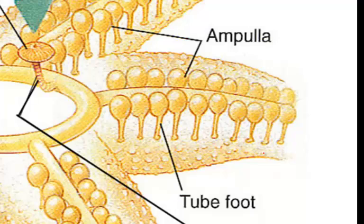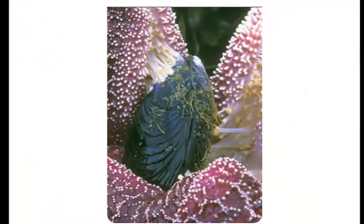Tube feet are used for movement, food collection, and respiration. The opposite end of the tube feet is a muscular sac called the ampulla. When muscles contract in the ampulla, water is forced into the tube feet and extends the suction cup-like structure on the end. The suction cup attaches to the surface, and this hydraulic suction enables all echinoderms to move. Some can apply force strong enough to open the shells of mollusks — here we can see tube feet attaching to the shell of a bivalve, with the ampulla pulling it open.